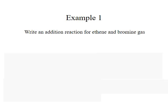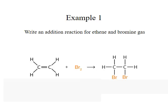Let's take a look at an example. Write an addition reaction for ethene and bromine gas. There is ethene and there is bromine gas. What's going to happen in this reaction is our double bond is going to be gone, we're going to end up with a single bond, and then one bromine on either side.